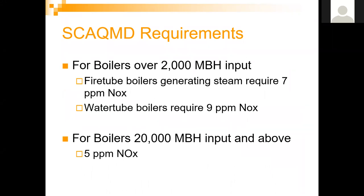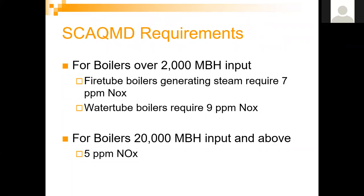For boilers over 2,000 MBH input: fire tube boilers generating steam now require 7 PPM NOx. This is a new requirement as of the end of 2018 — previously it was 9 PPM for both water tube and fire tube. At the end of 2018, the South Coast AQMD did a BACT determination — best available control technology determination — and determined that fire tube boilers generating steam had proven they could operate at sub-7 PPM, so they changed the regulation down to 7 PPM NOx specifically for fire tube boilers generating steam.